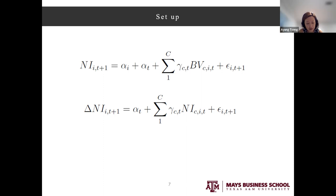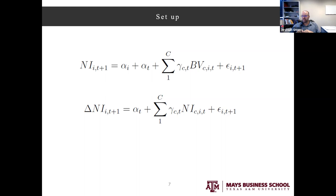A question: why not run earnings beta directly — regressing firm-level earnings on aggregate earnings — to estimate aggregate risk for each line item? A couple of reasons. First, if you're dealing with a cross-section, aggregate ROA doesn't tell you anything about cross-sectional differences across firms. Second, if you have many risk factors and go to the time series, you get very few data points to estimate them — essentially one or two shots at it.